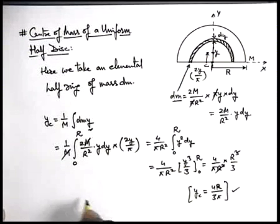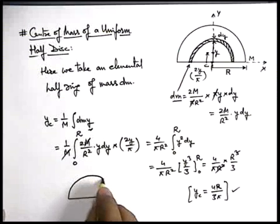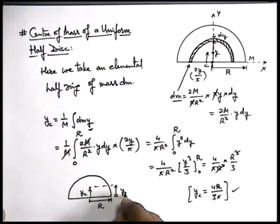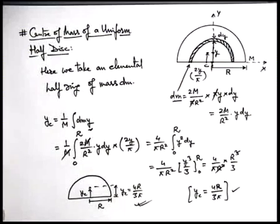Which states that if we are having a half disc which is of radius r, in case of a half disc, center of mass is located at a height yc which is given as yc = 4r/(3π). This is a very useful result; in many problems we are going to use it. So keep it in your mind also.